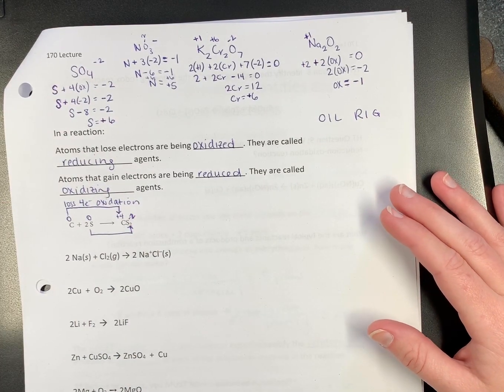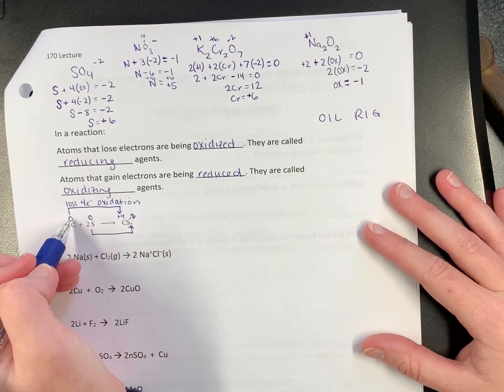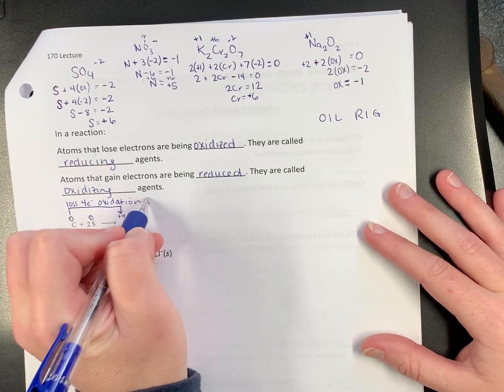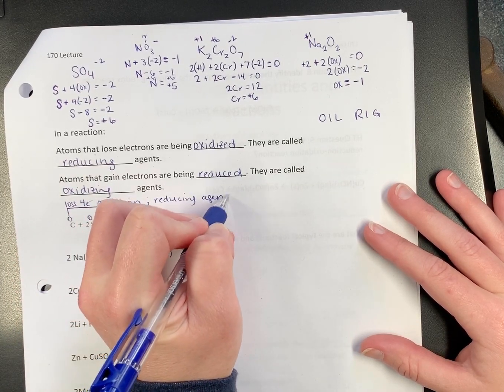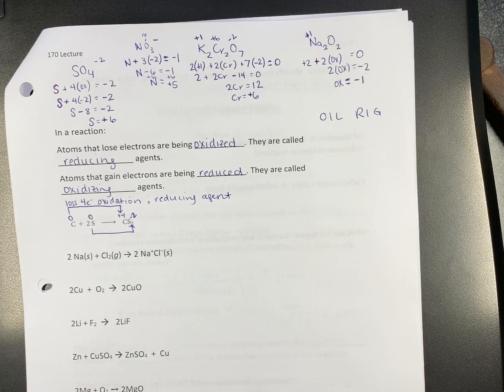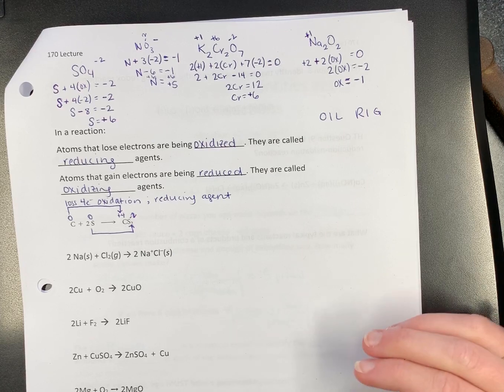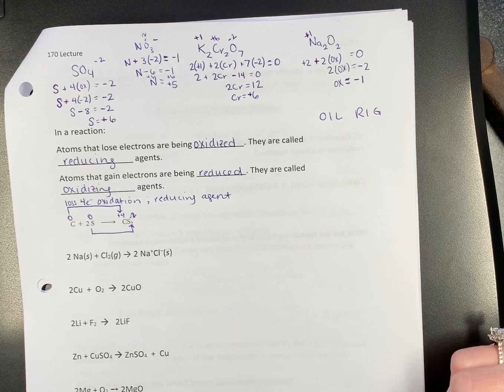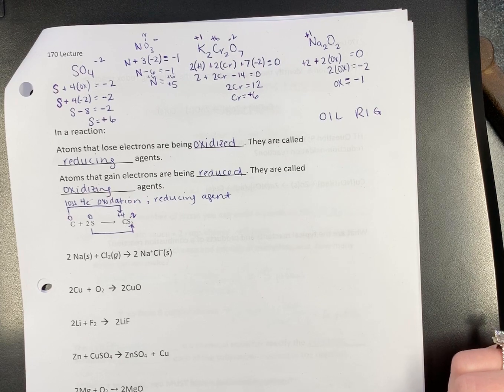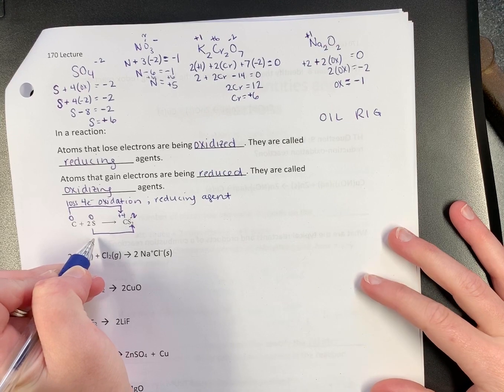Then go ahead and say, if this is oxidation, carbon is the reducing agent. Do it all at once before you get confused. Then you go down to your next one.